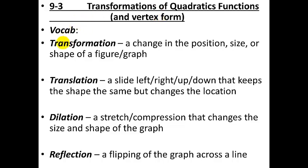First, what is a transformation overall? A transformation is any change in the position, shape, or size of a graph. You can have a parabola or a line. If you change the steepness of a line or the y-intercept, you'd be transforming it in some way. For a parabola, you can move it around, stretch it, shrink it, or flip it over. All these different kinds of changes collectively are called transformations.